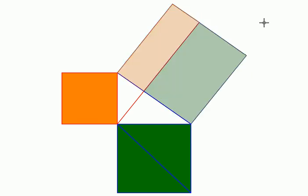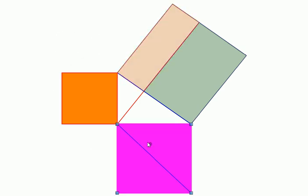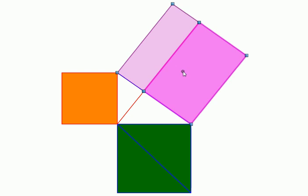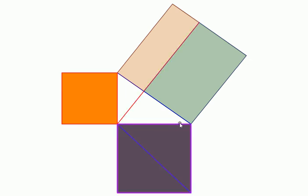This triangle has half the area of this square, while this triangle has half the area of this rectangle. The triangles have the same area, so twice of that remains the same — that is, the area of this square equals the area of this rectangle. So we have proved that the area of this square equals this rectangle and the area of that square equals that rectangle. Therefore the sum of the areas of these two smaller squares equals the sum of the areas of the two rectangles, which is the area of the bigger square. So a squared plus b squared equals c squared — that is Pythagoras theorem.